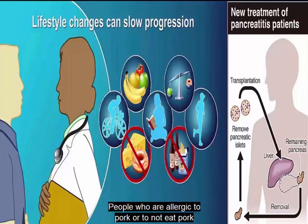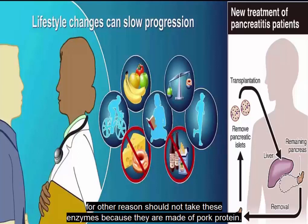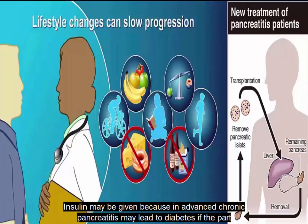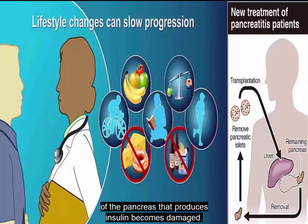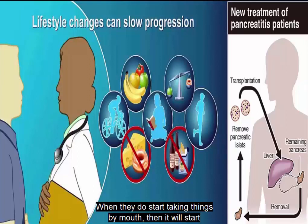Insulin may be given because advanced chronic pancreatitis may lead to diabetes if the part of the pancreas that produces insulin becomes damaged. Anticholinergic drugs are given to dry the person out. When they do start taking things by mouth, it will start with clear liquids to see how they do.